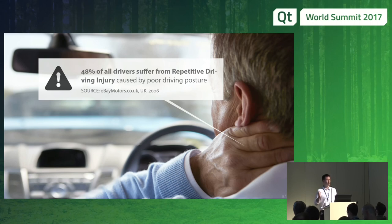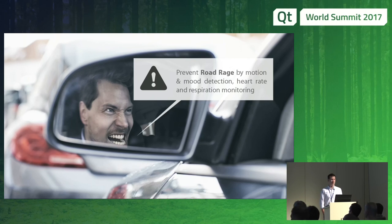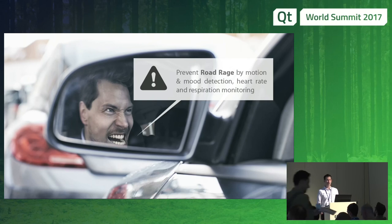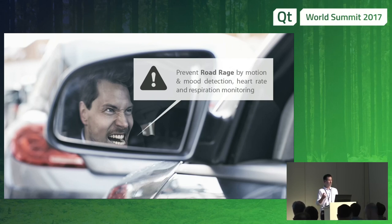The input data we need is to understand the size of the driver, how he is sitting, where his hands are, and what he is doing in the car. And finally, the ultimate thing to solve — everybody knows this — you're stuck in traffic, you're getting angry, distracted, you don't pay attention to the road as you should. We call this road rage. You get upset and might cause a crash. Again, something where we'd like to understand the mood the driver is in, what are the facial expressions, and how he's behaving in the car.